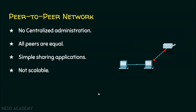Now we will see what is a peer-to-peer network. In a peer-to-peer network, every node is called a peer and they are at an equal level — nobody is superior and nobody is inferior. The problem with this is there is nobody in a centralized position to administer the communication, meaning whatever rights one peer has, every other peer also has, and there is no centralized administration. This is suitable for smaller applications but not for larger applications, and the peer-to-peer network is not scalable.